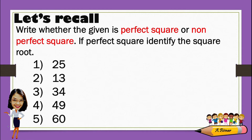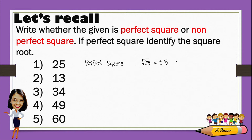A perfect square — identify the square root for number 1: 25. 25 is a perfect square. This is because 25 has a square root, and the square root of 25 is positive and negative 5. However, if we are about to get the principal root, then the square root of 25 will be 5.